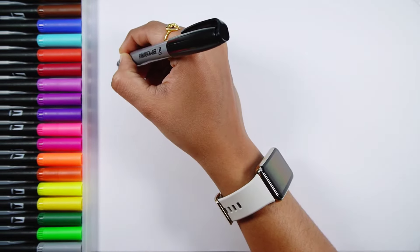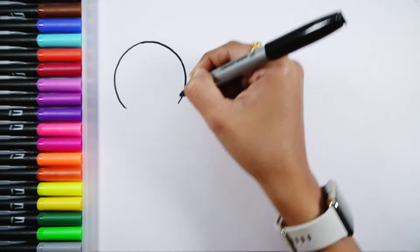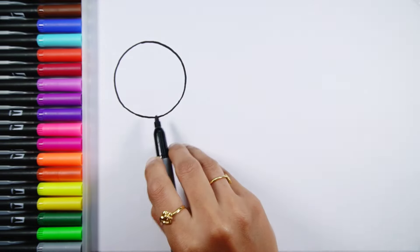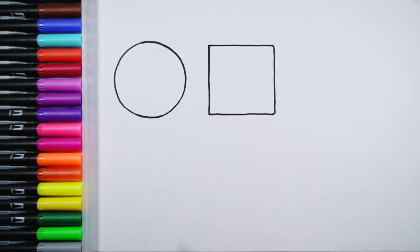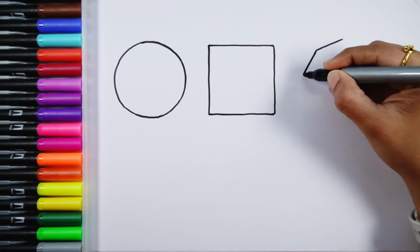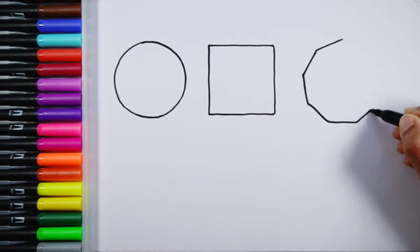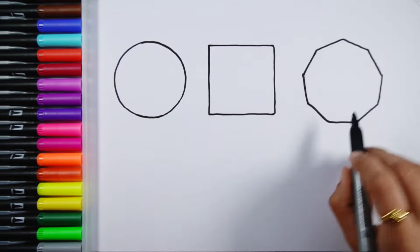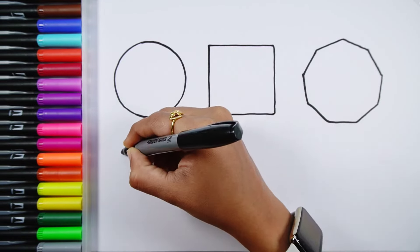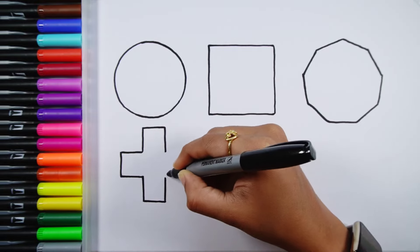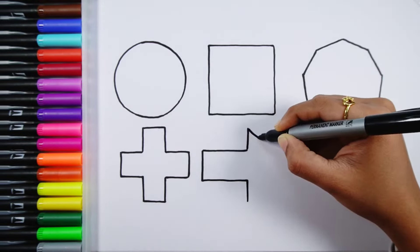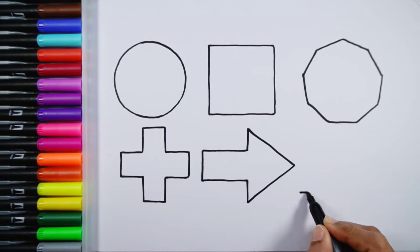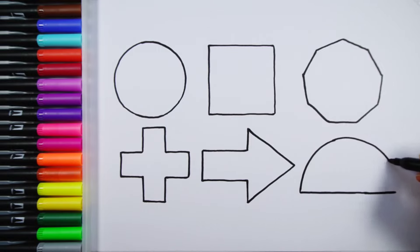Let's learn to draw some 2D shapes. Circle, square, nonagon, cross, arrow, and semicircle.